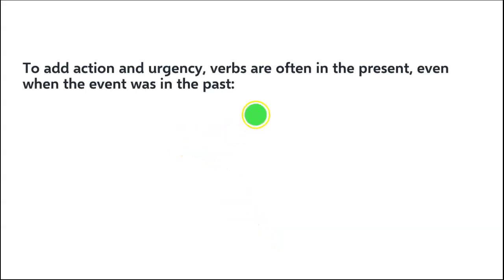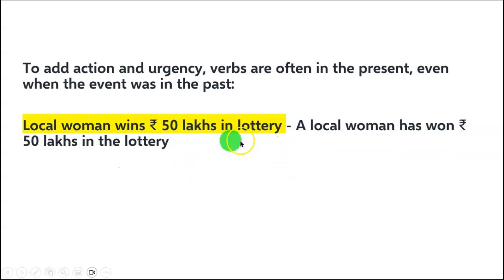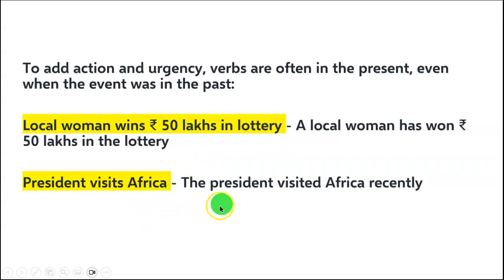The second point: to add action and urgency, verbs are often in the present even when an event has happened in the past. For example: 'Local woman wins rupees 50 lakhs in lottery.' The correct version is 'A local woman has won rupees 50 lakhs in the lottery.' Another example: 'President visits Africa.' The president visited Africa recently — the visit may be over, but newspapers always write it in the present.